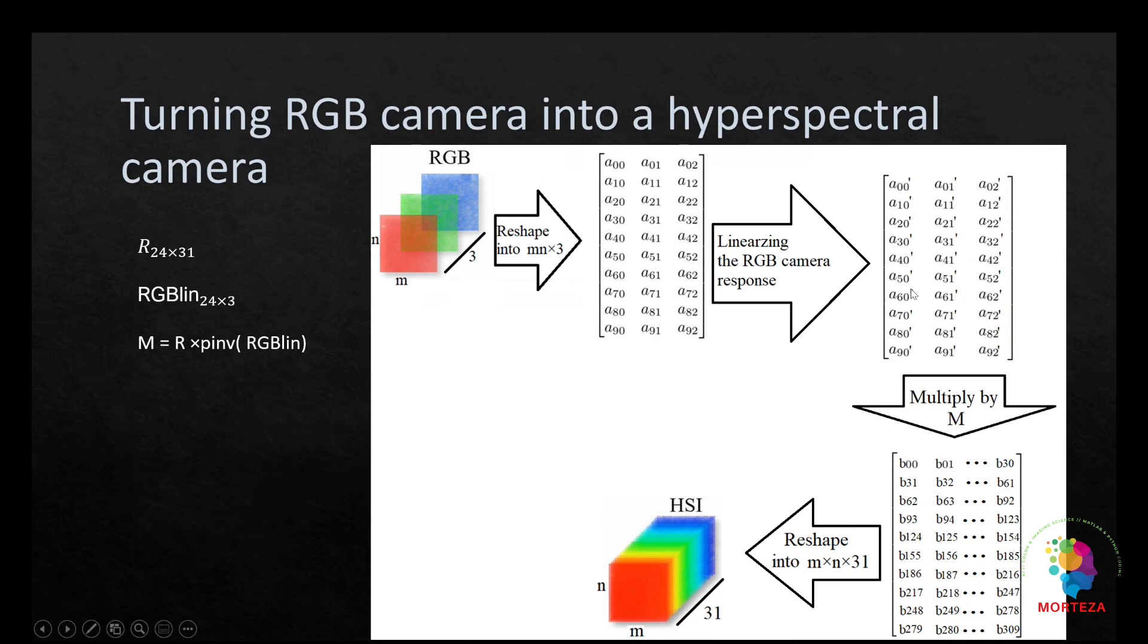After we linearize it, which we show with A prime, the linearized camera responses are multiplied by matrix M that we came up with, which leads to the spectral reflectance data, which has 31 columns and M by N rows. The number of rows is the same, but the columns are more because this is only 3, which is RGB, but it has 31 columns, which stands for reflectance data.